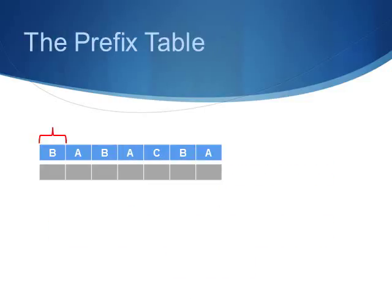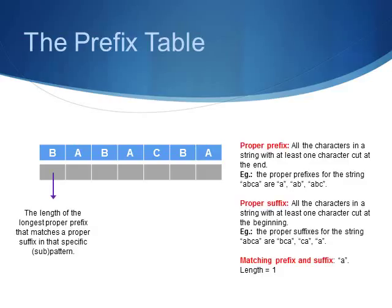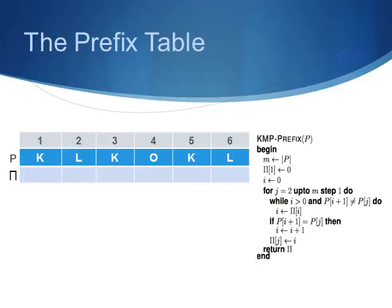We compute the prefix table by comparing the pattern against itself. Basically, for each sub-pattern of the string, we compute the length of its longest prefix that is also a proper suffix. If that went above your head, please pause the video and take a moment to understand the definitions. Let's start and compute the prefix table for example. We begin by initializing M with the size of our pattern, which is 6. Pi[1] becomes 0 because a sub-pattern of size 1 cannot have a proper prefix or suffix. And i is initiated with 0 as well.